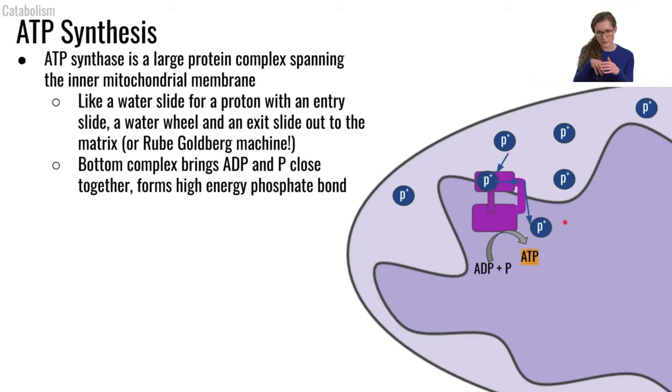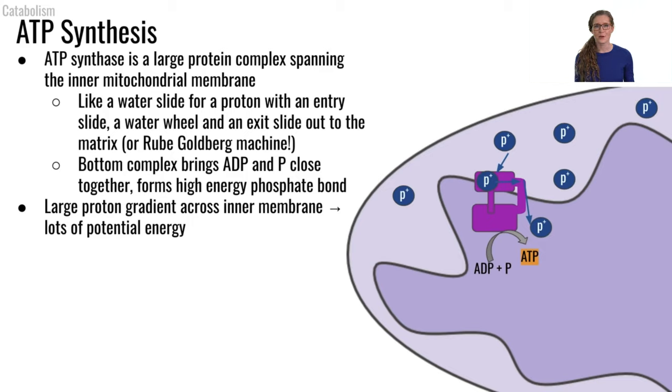And then at the end, the proton just kind of flies down a little slide and ends up inside the matrix of the mitochondria. So bringing this phosphate in close proximity to ADP to actually form a bond requires a big investment of energy.